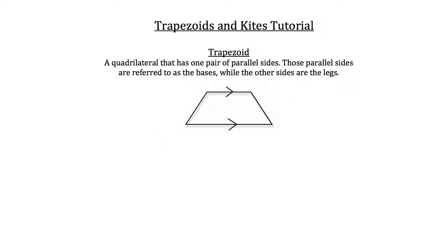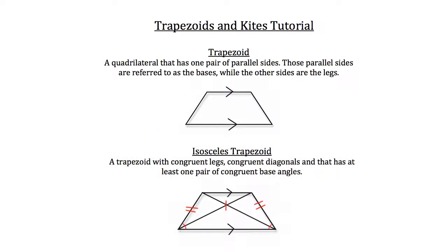And we also have an isosceles trapezoid, which is a trapezoid with congruent legs, congruent diagonals, and that has at least one pair of congruent base angles. So the congruent base angles could be the red base angles here that are indicated, or you could say that these two angles were congruent, indicated in blue. Either one would make them isosceles trapezoids.